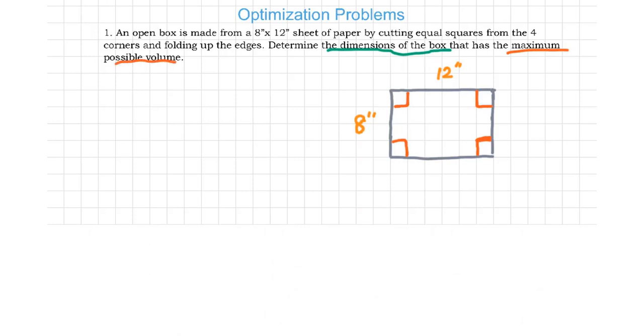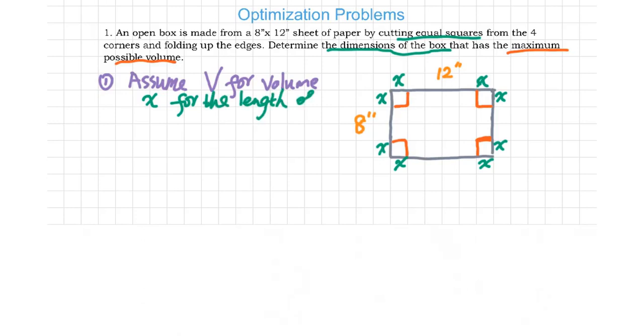First of all, for the word problem, we need to set up the variable. So we use V to stand for the volume. Assume this V for volume. And the x for the length of cutting equal square. Here we put this is x. So x for the length of cutting equal square.